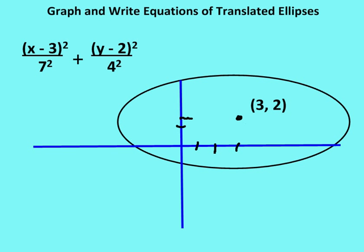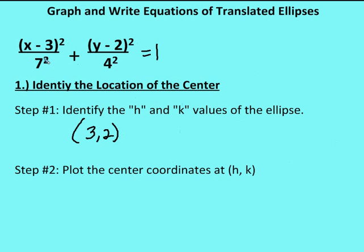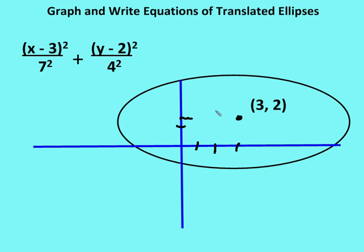At the same time, I can identify whether the major axis is horizontal or vertical. I look at the term with the highest denominator value — in this case 7 squared — and see that the variable is x, so I know it's a horizontal major axis. The elongated sections go left and right, so those are the vertices.